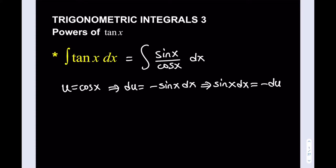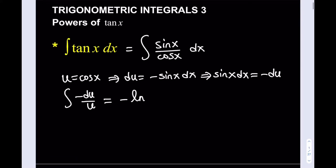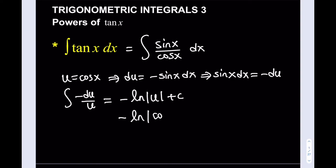Since I have cosine x at the bottom, it makes sense to call that u. If you call u equals sine x, you're not going to get the du because cosine x will be in the denominator — that's why I picked cosine x. Substituting everything gives me negative du over u, which equals negative ln of the absolute value of u plus c. Since u equals cosine x, back-substituting gives us the integral of tangent x dx equals negative ln|cos x| plus c.